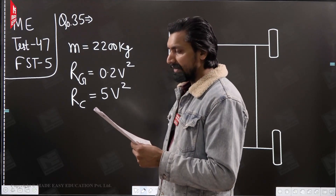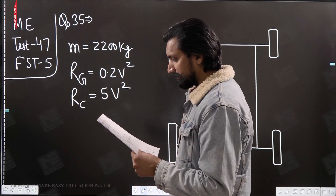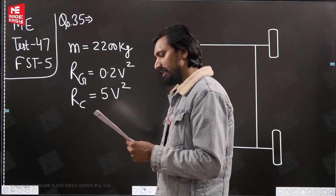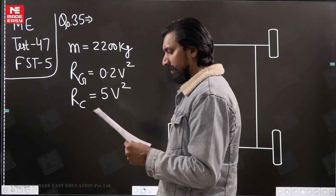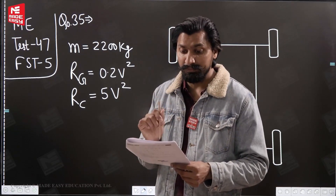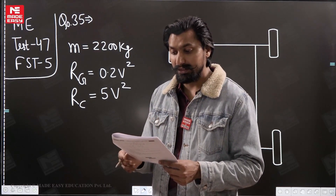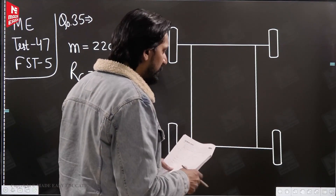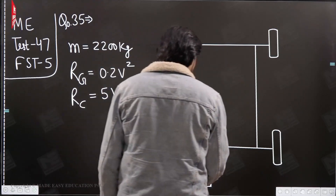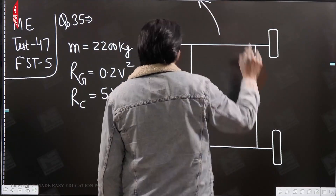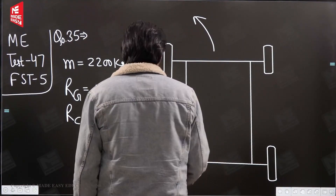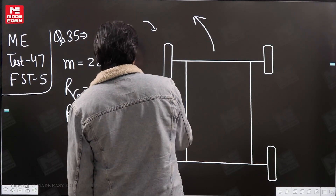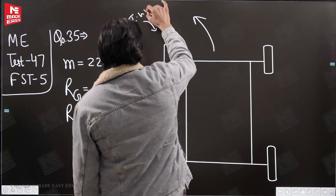If all four wheels maintain contact with the road surface, what is the limiting speed of the vehicle? Assuming gyroscopic and centrifugal reactions on each outer wheel are acting upward. If this vehicle is taking a turn, these are going to be the inner wheels and these are going to be the outer wheels.